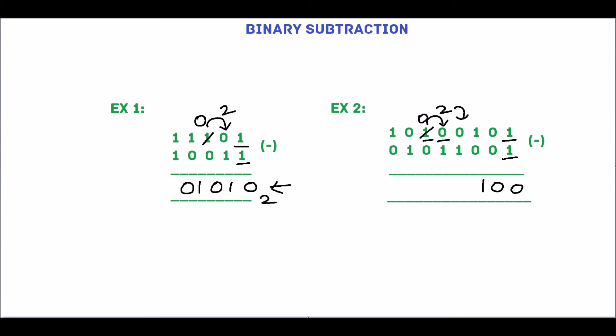Take borrow from this 2. Borrow value will be 2. 2 has given the borrow, so it will become 1.